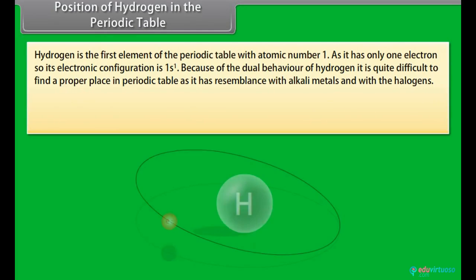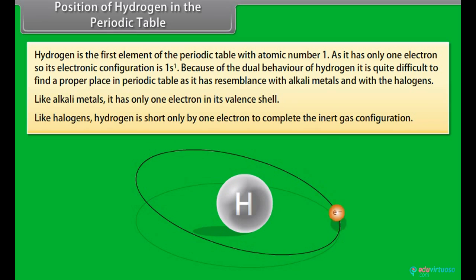Position of hydrogen in the periodic table is the first element of the periodic table with atomic number 1. Because of the dual behavior of dihydrogen, it is quite difficult to find a proper place in the periodic table as it has resemblance with alkali metals and with the halogens. Like alkali metals, it has only one electron in its valence shell. Like halogens, hydrogen is short only by one electron to complete the inert gas configuration.